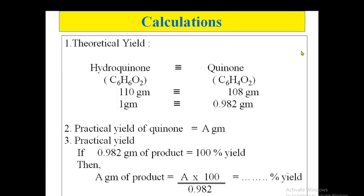Now let's see the calculations. Theoretical yield can be calculated as follows. We have taken hydroquinone and converted it into quinone.